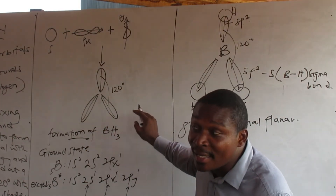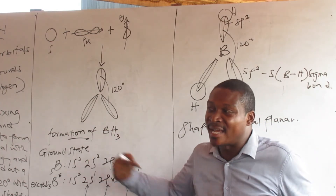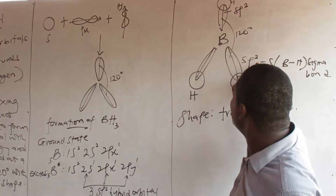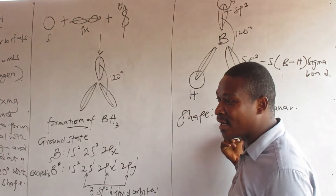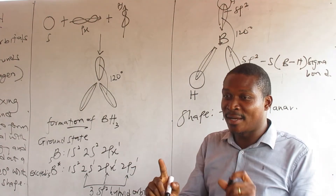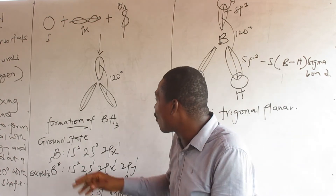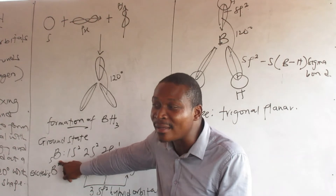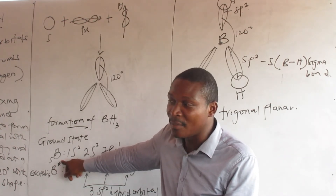So when you form BCl3, the same way — Cl has a p orbital — the chlorine overlaps with the p orbital, not s. So you form an sp2–p boron-chlorine sigma bond, not pi. Whether you undergo sp2 or sp3 depends on the central atom involved. If you use a carbon central atom, you end up in sp3.